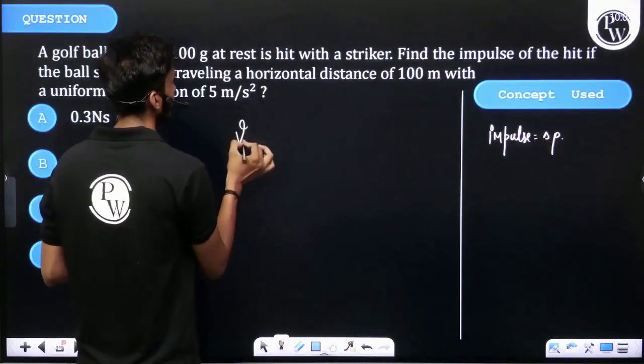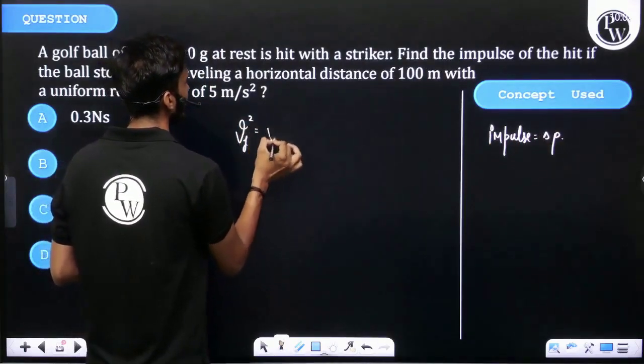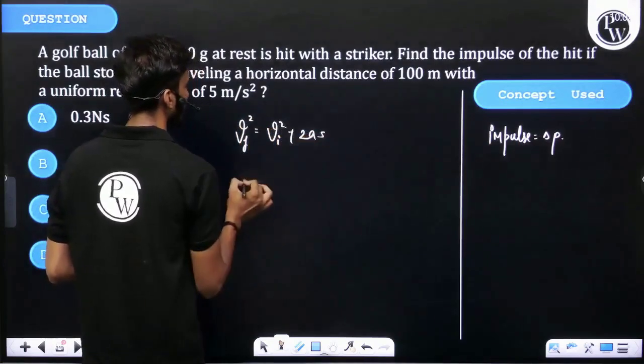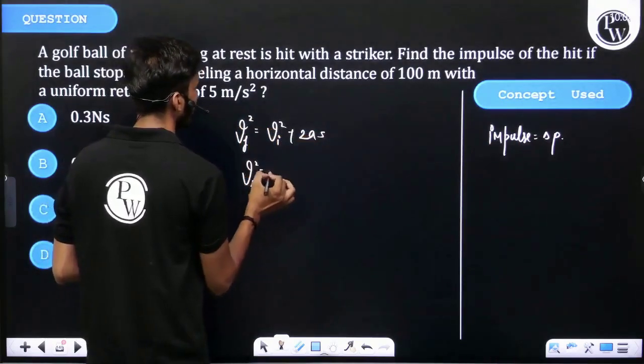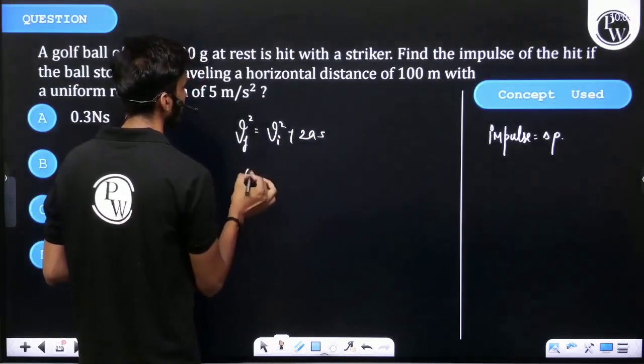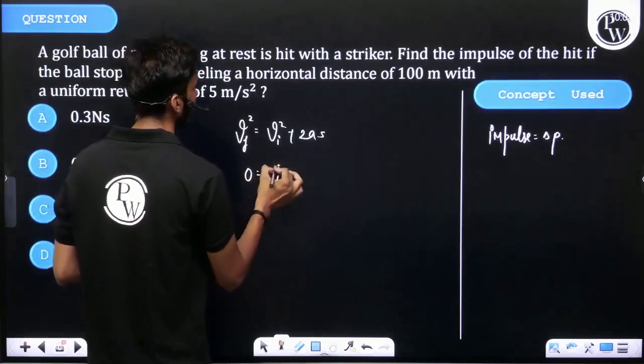The final velocity squared equals V initial squared plus 2 times acceleration times displacement. So V final squared equals—wait, V final is zero, V initial is unknown—plus 2 times acceleration times displacement.